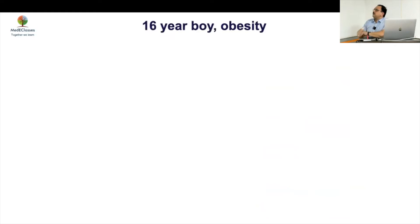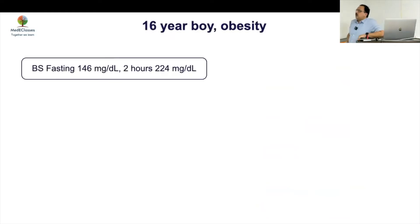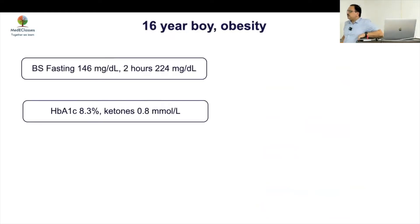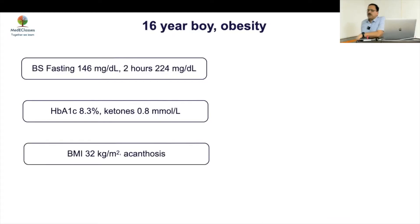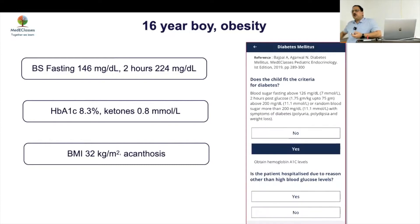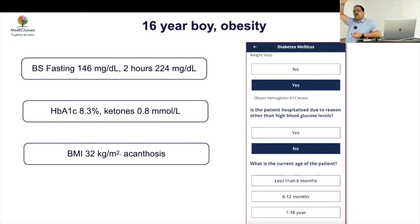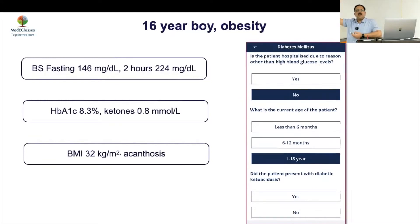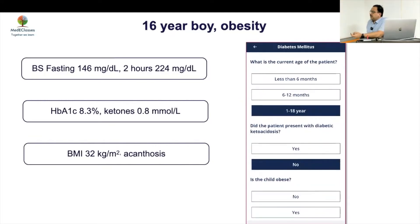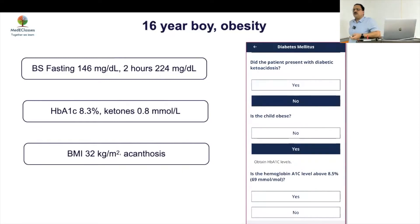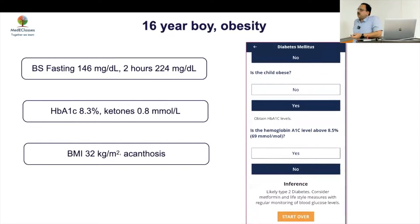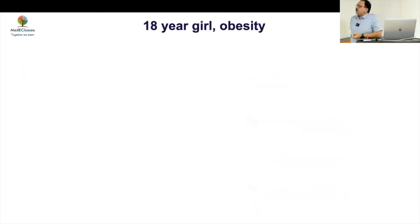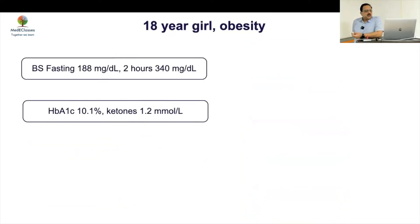Case 3: a 16-year-old boy with obesity, hyperglycemia, HbA1c of 8.3, ketones 0.8, BMI 32, and acanthosis present. This is obesity without DKA — more than one year obese, no DKA — most likely Type 2 diabetes. Because the HbA1c is not very high, you can start on metformin alone in this setting.